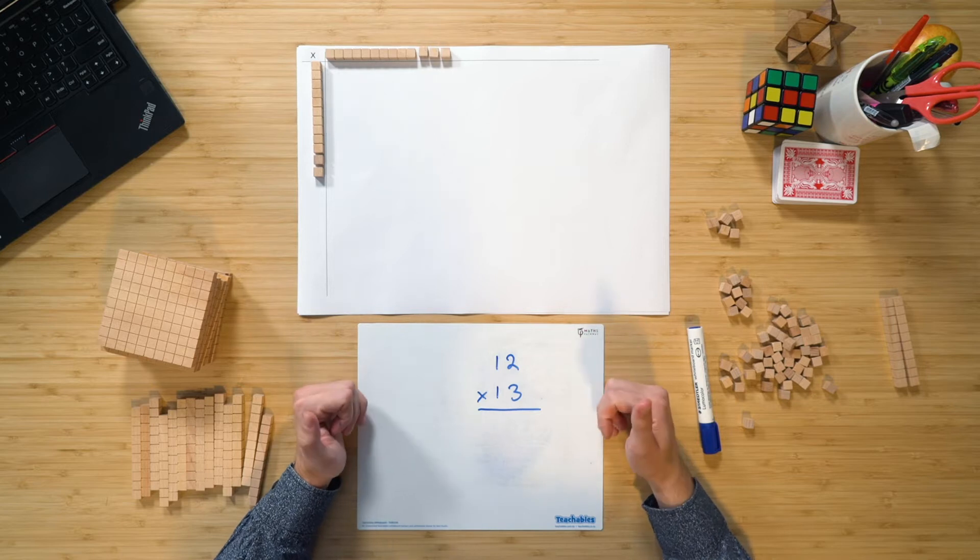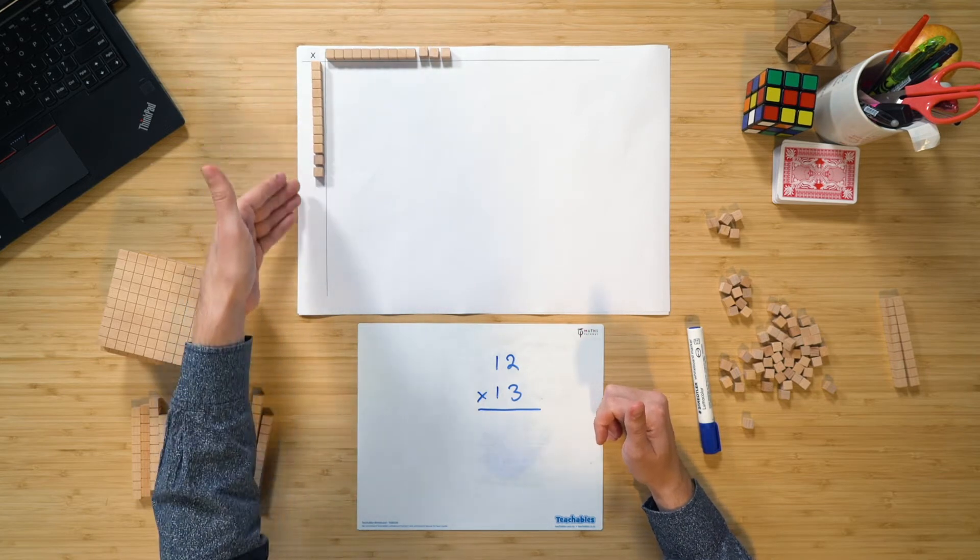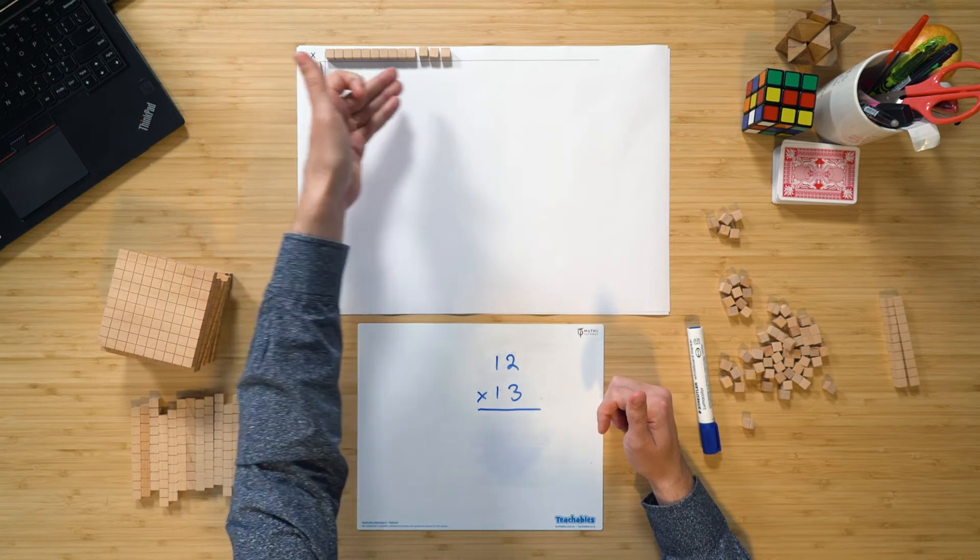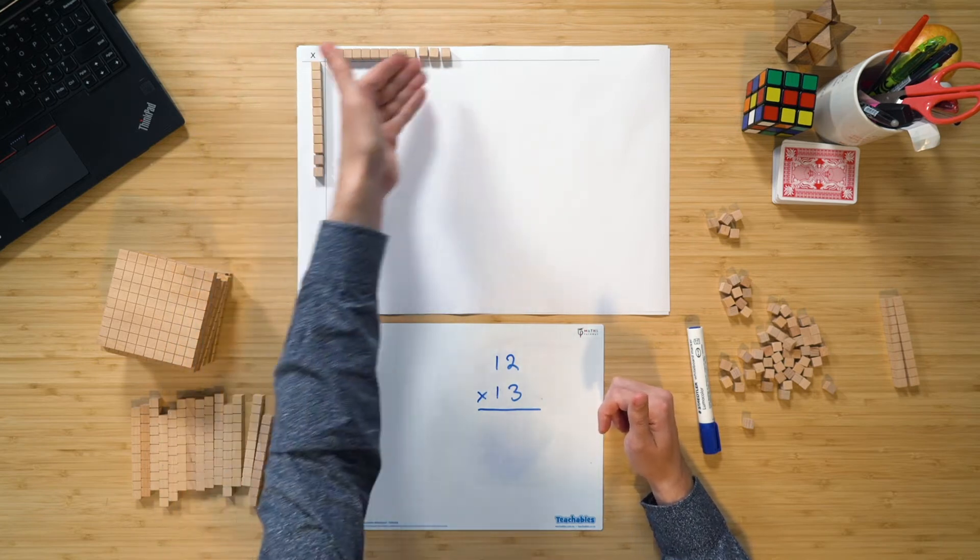Here's where it gets really exciting. I can actually use this model to represent 2-digit multiplication as well. Let's have a look. So you can see in this question, it says 12 times 13. And I've represented what's happening on the multiplication chart by having 1 10 and 2 1s, and 1 10 and 3 1s to represent 12 and 13.